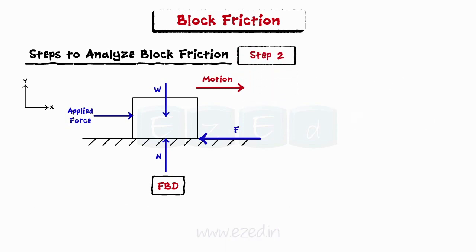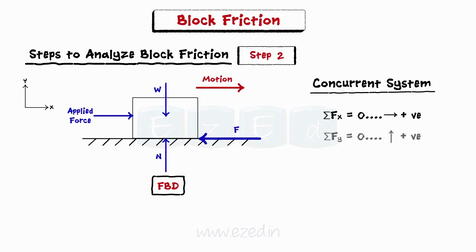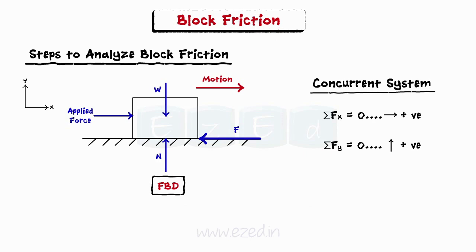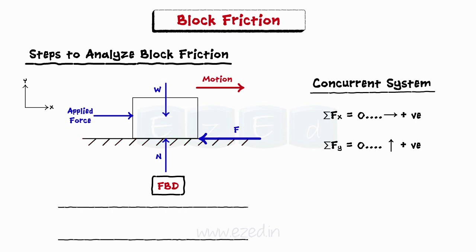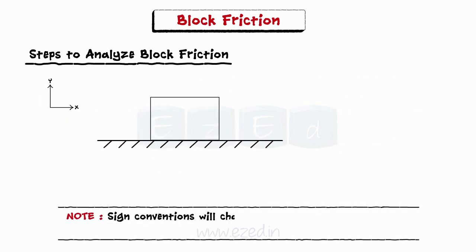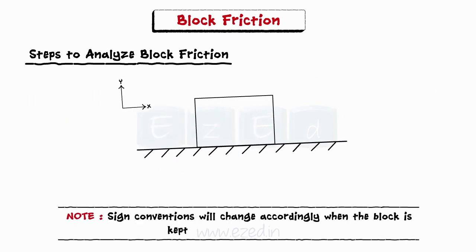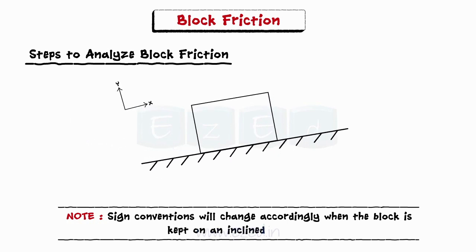Since we have a concurrent system of forces in equilibrium, we apply two conditions of equilibrium: the summation of all forces in the x and y directions is taken as zero. Remember that the above sign conventions are for a block kept on a horizontal plane. Sign conventions will change accordingly when the block is kept on an inclined surface.